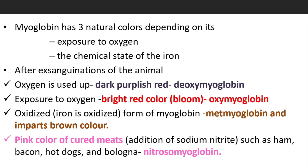Myoglobin has three natural colors depending on its exposure to oxygen and the chemical state of the iron. After exsanguination, oxygen is used up, giving a dark purplish-red color — deoxymyoglobin. Upon exposure to oxygen, meat develops a bright red color called bloom — oxymyoglobin. The oxidized form of myoglobin is metmyoglobin, which imparts a brown color.